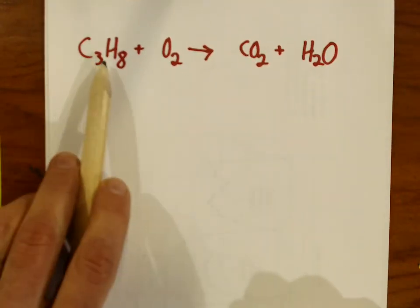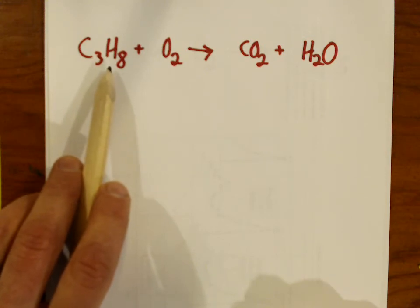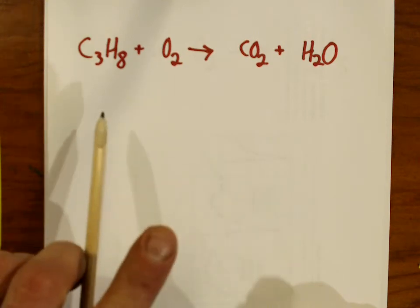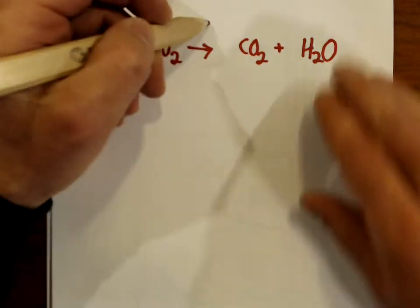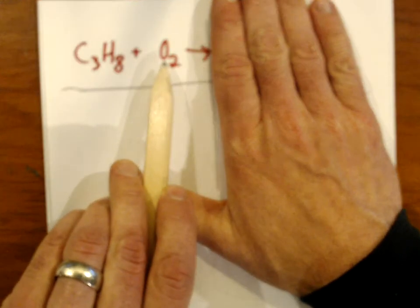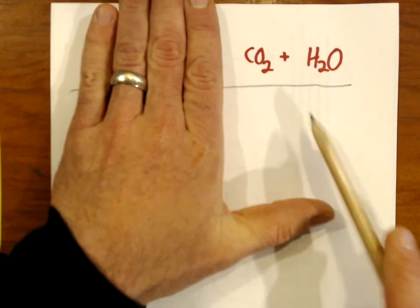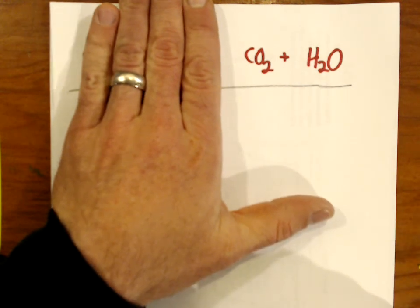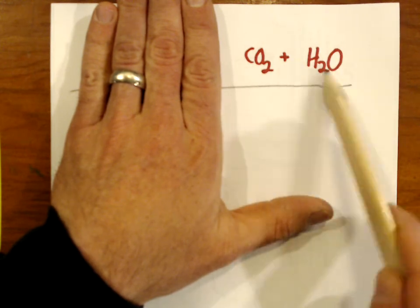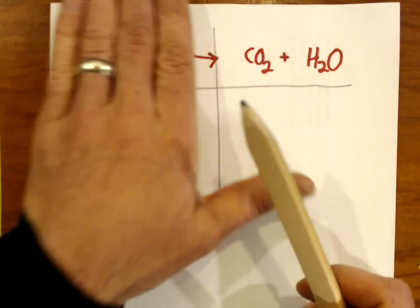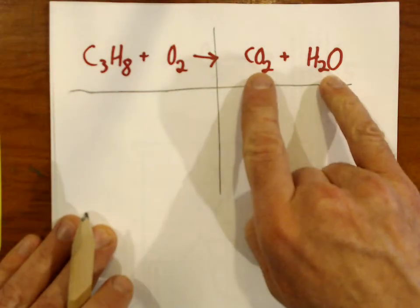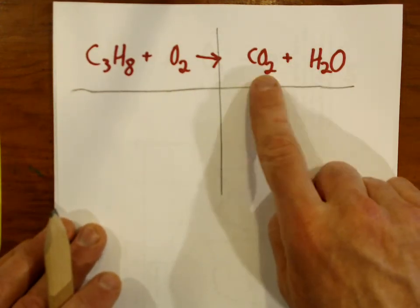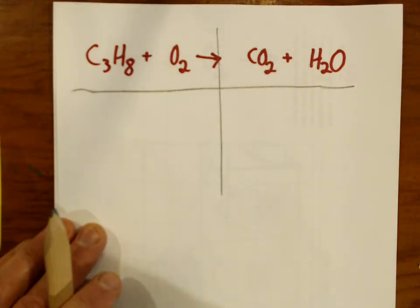Here's another one — the combustion of propane. If you like to cook on the grill, you use propane. This is a tricky equation. Oxygen is often a troublemaker. If we look only at the reactant side, we see O2. But on the product side, oxygen appears in two different places. When you see an element such as oxygen — or sometimes chlorine or hydrogen — that appears in more than one compound on the same side of an equation, balance it last. Ignore it for the time being and go after other elements.